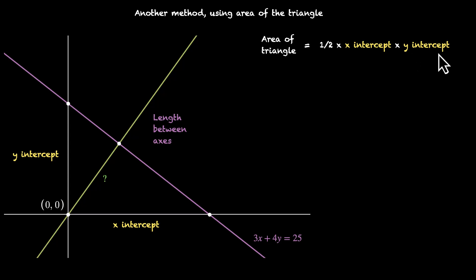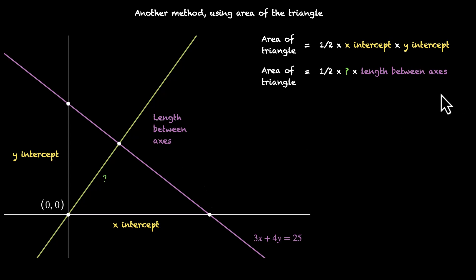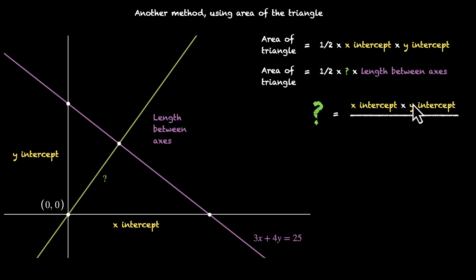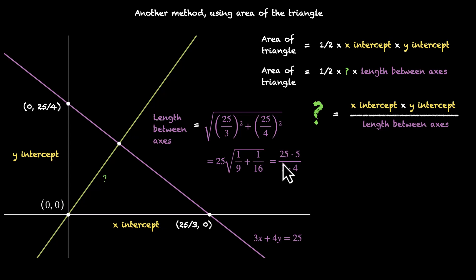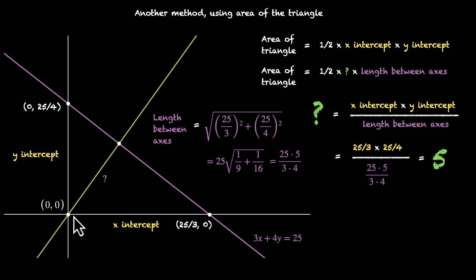Area of the triangle is half times x-intercept times y-intercept, and it's also equal to half times the distance times the length between axis intercepts. This means the distance from the origin equals x-intercept times y-intercept divided by the length between axis intercepts. The x-intercept (when Y=0) is 25 by 3, the y-intercept (when X=0) is 25 by 4, and the length between axis intercepts is 25 times 5 by 3 times 4. Plugging in all values, the distance equals 5 units.